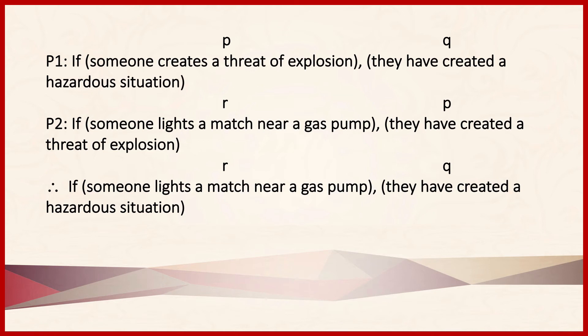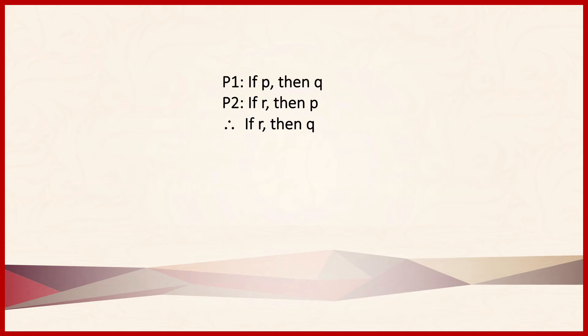If we write that out symbolically, we have if P then Q, if R then P, therefore if R then Q. This does not obviously match any of the argument forms that appear in the table in section 7.1. So it's hard to assess the validity of this argument.